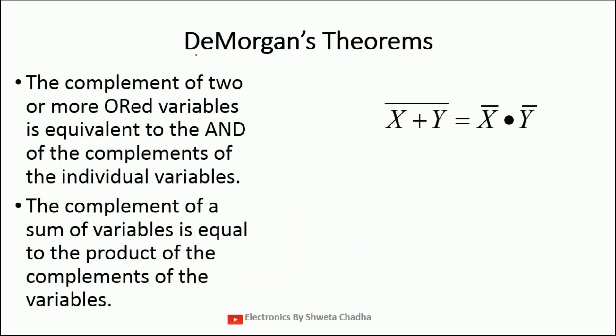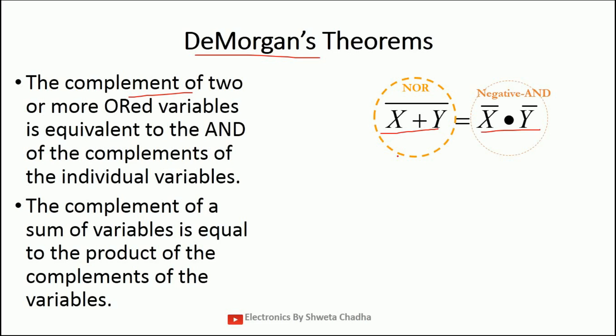Here comes our second De Morgan's theorem. The second De Morgan's theorem states that the complement of two or more ORed variables is equivalent to the AND of complements of the individual variables. That means the NOR gate is equal to the AND gate of complements of individual variables. The complement of sum of variables is equal to the product of complements of the variables. Hence this NOR gate is equivalent to the negative AND gate. This is the second law of De Morgan's theorem.